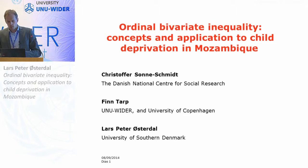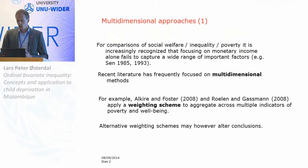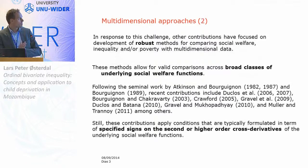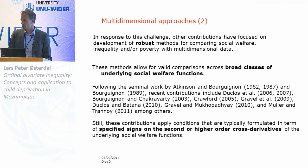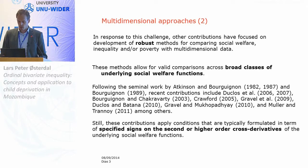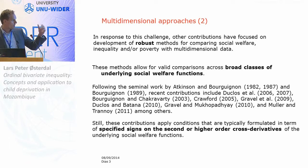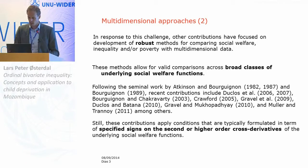However, the problem is that such weighting schemes — if you take another weighting scheme, it may also alter the conclusions. In response to this challenge, other contributions have focused on the development of robust methods for comparison of welfare, inequality, or poverty. The idea is that these methods allow for a broad class of underlying social welfare functions, and their comparisons are robust in this way. Following similar work by Atkinson and Young, there is now a fairly large literature along these lines, and the work I will present today is closely related, inspired by this work.